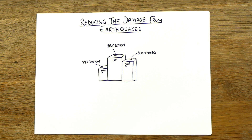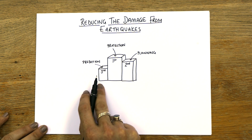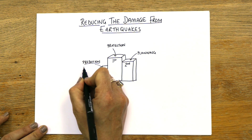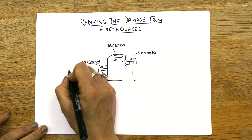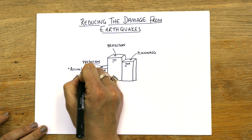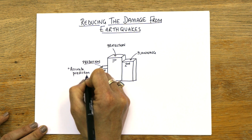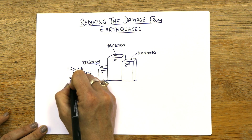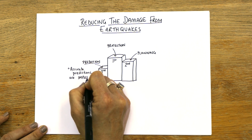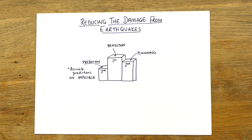Now I could just leave it like that, but let's get some extra in there. Starting in third place: prediction. Accurate predictions for earthquakes are literally impossible. If it was possible to predict them, honestly, so many lives would be saved — you'd be famous and rich — but nobody has come up with a way of predicting them.